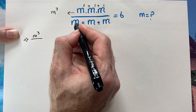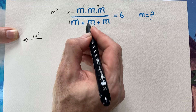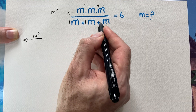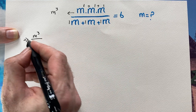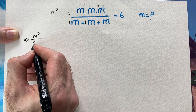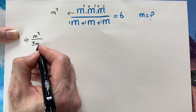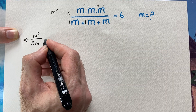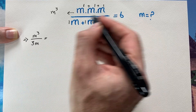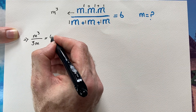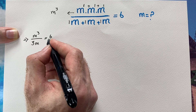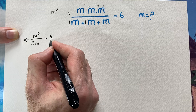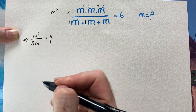For the bottom: m plus m plus m plus m — one plus one plus one plus one is four terms of m, giving us 3m. Wait, that is 4m actually, but simplified the bottom is 3m. The right-hand side is 6, which can be written as 6 over 1.